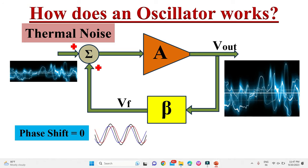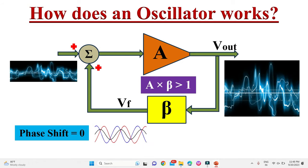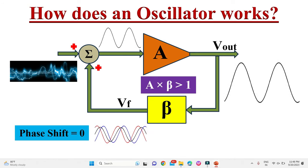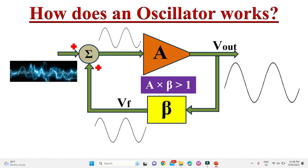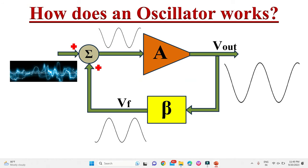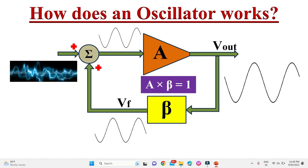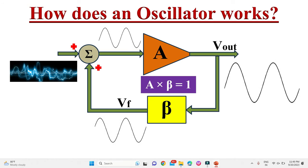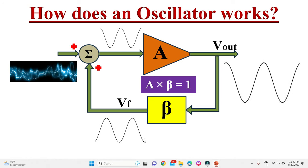So only that one particular frequency which has zero phase shift will get added with the input noise. In this oscillator circuit, initially the loop gain A·beta is set slightly greater than one. Because of this, the noise signal of that particular frequency builds up over a period of time. Once the signal reaches a certain voltage level, the loop gain of the circuit becomes one, due to the non-linear behavior of either the amplifier or the feedback circuit. In this way, we get sustained oscillations at the output.